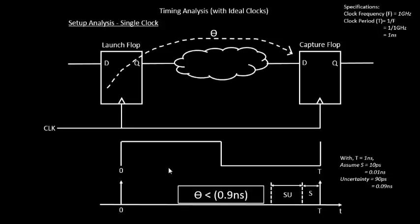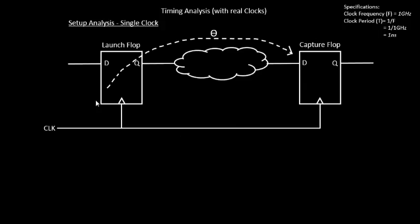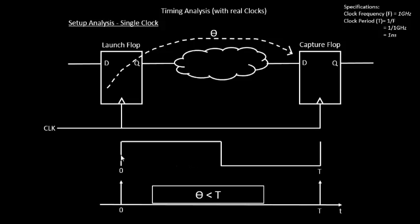Now let's move on to more practical scenarios involving real clocks. Let's build the clock tree and do timing analysis with real clocks. The circuitry looks a bit different now — where the clock tree was ideal before, now it will have buffers. The clock edge reaches the launch flop and the capture flop through a set of real buffers and wires.